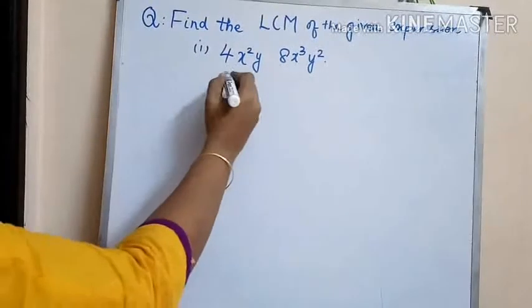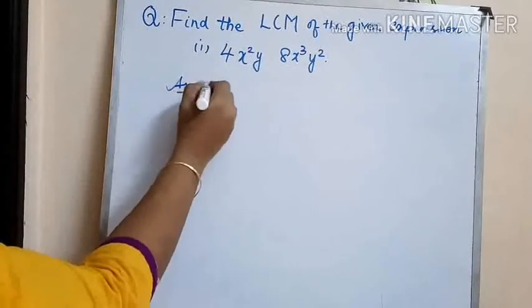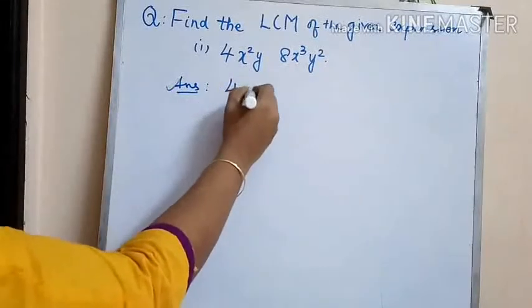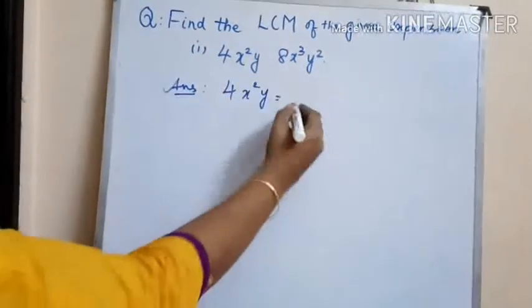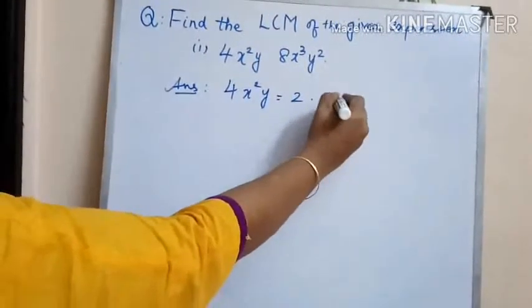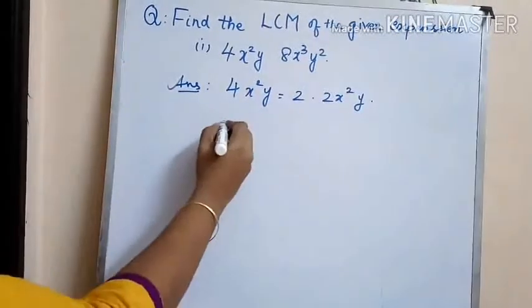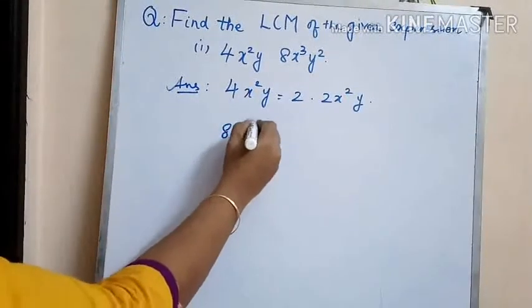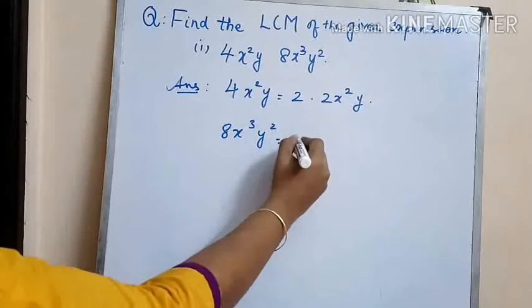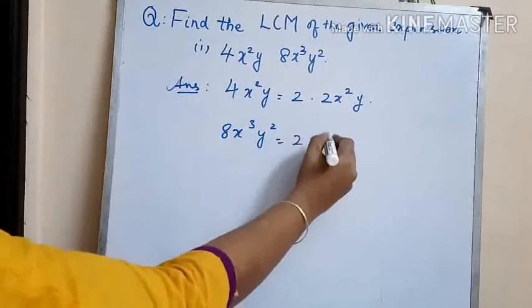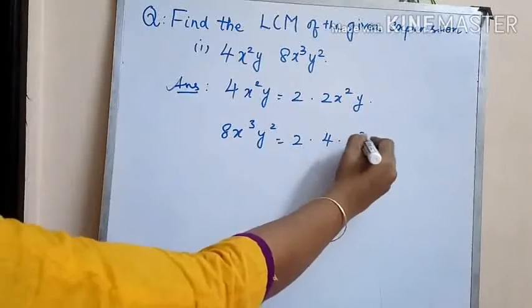Here we have 4x squared y and 8x cubed y squared. The polynomial 4x squared y can be split into 2 into 2x squared y, and 8x cubed y squared into 2 into 4x cubed y squared.